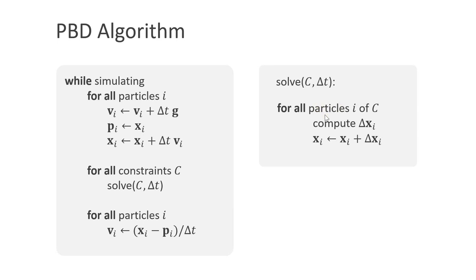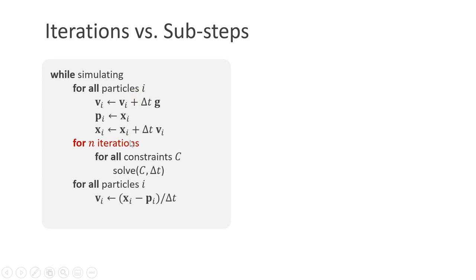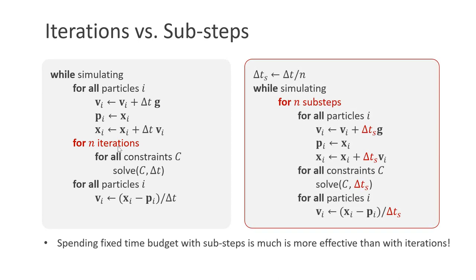Solving a constraint means computing a correction vector delta x for all particles participating in the constraint. After computing the correction vectors delta x, we apply them to the current positions. If multiple intertwined constraints are present, then solving them only once per time step yields stretchy objects. Implicit solvers typically run through all the constraints multiple times. We can do that too by putting an iteration loop around the constraint solving loop, running through all the constraints n times at each time step. This indeed makes constraints less stretchy.